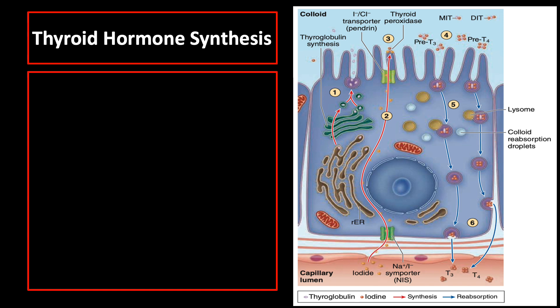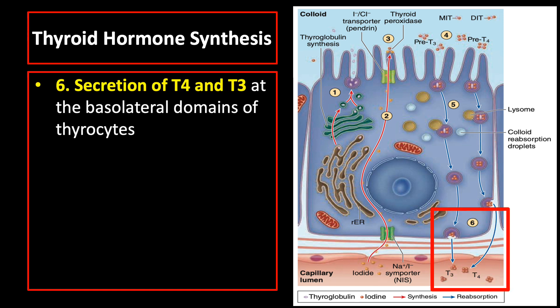The last step is secretion of T4 and T3 at the basolateral domains of thyrocytes. Nearly all of both thyroid hormones are carried in blood tightly bound to thyroxine-binding globulin or albumin.